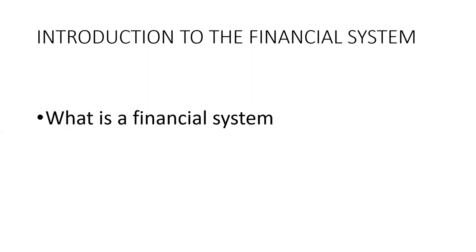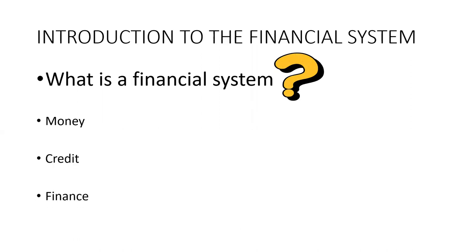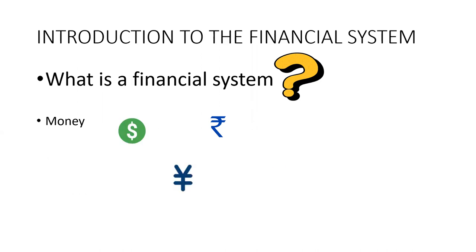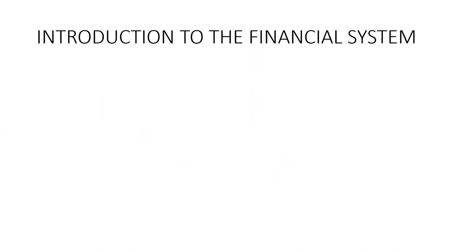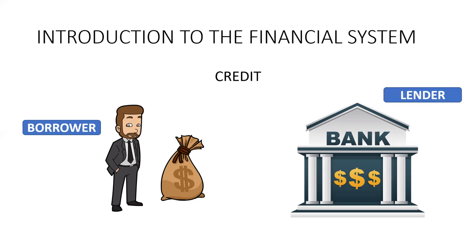The first question we need to answer is: what is a financial system? Money, credit and finance are three terms used synonymously in trade and commerce. Money is a medium of exchange used in the form of currencies in different countries. Credit is funds or money borrowed from third parties — in this case there are two parties, a borrower and a lender. The borrower borrows the money and the lender lends the money to the borrower.